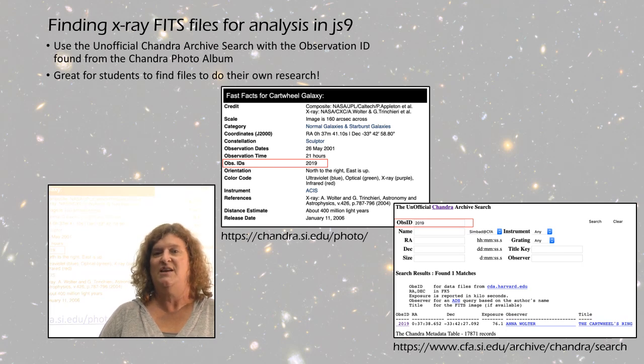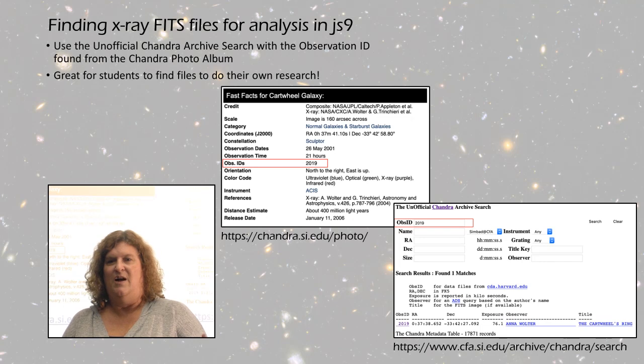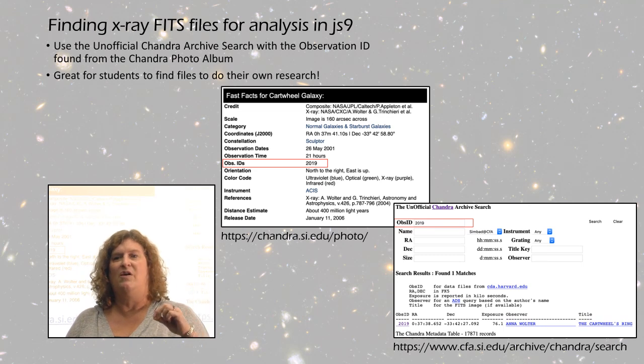If you know the observation ID, you can go to the unofficial Chandra archive search, type in that observation ID number, and click on a link to retrieve the FITS file that can be uploaded into JS9. JS9 even lets you type in the URL of where the FITS file is and do everything online without downloading anything to your computer.